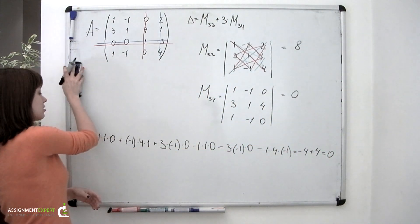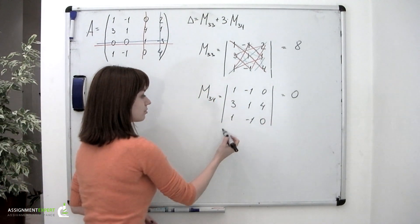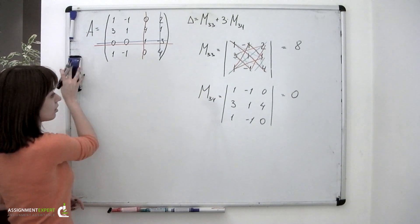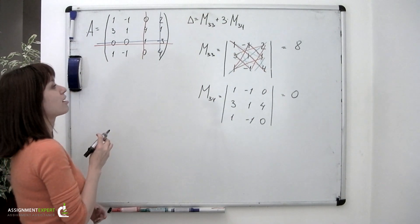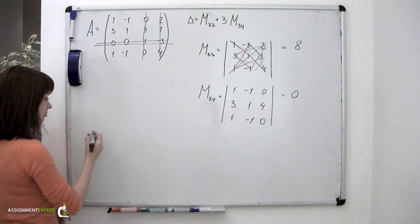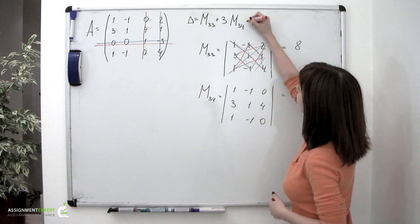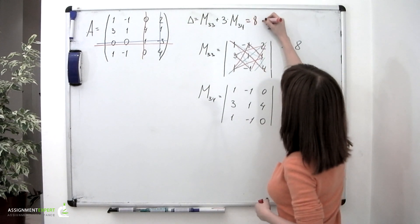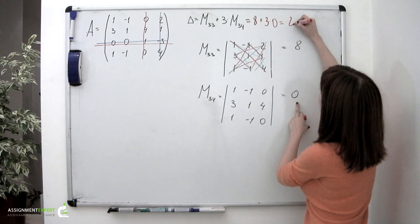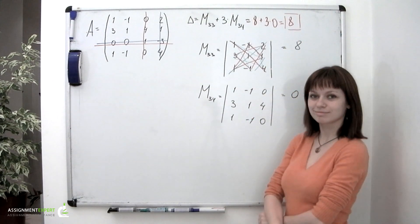We could have seen that right away, because as you can see, this determinant has two equal rows, which means it corresponds to a degenerate matrix. Now that we have both minors, we can calculate the determinant: delta equals 8 plus 3 times 0, which obviously equals 8. And that is our answer.